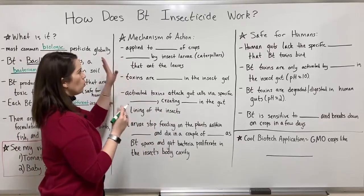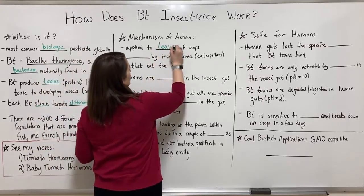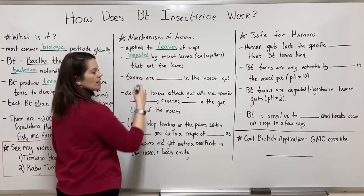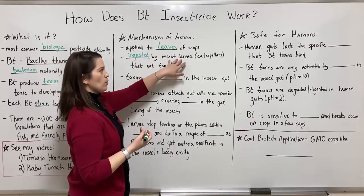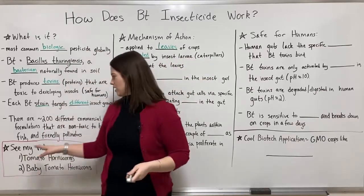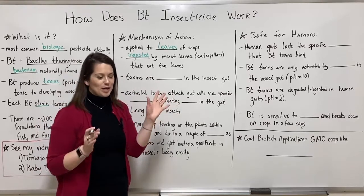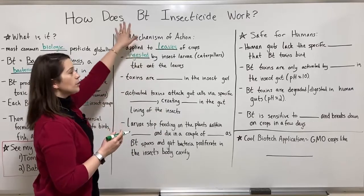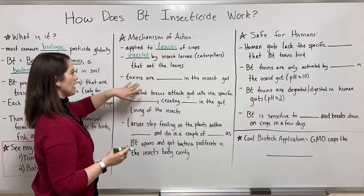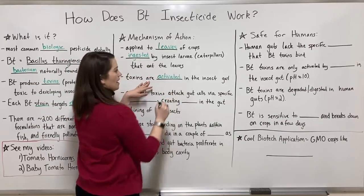Now let's talk about the mechanism of action. BT insecticide is applied to the leaves of crops where it can be ingested — eaten — by insect larvae. For a lot of crops, we're talking about caterpillars like tomato hornworms and tobacco hornworms — those big fat green worms eating your crops. If you spray BT insecticide on the leaves of the crops, it gets ingested by the insect larvae.